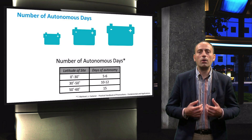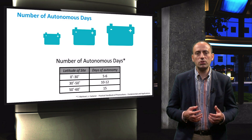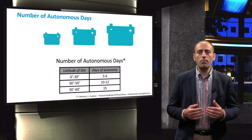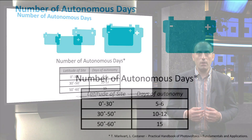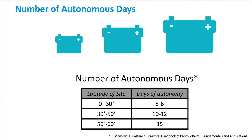Here, the number of autonomous days for a certain location are given based on their latitude. You can see that the higher the latitudes, the larger the number of autonomous days. This is an obvious correlation, as the daily radiance decreases as you move further away from the equator. Since the latitude is zero at the equator, the number of autonomous days increases with increasing latitude.